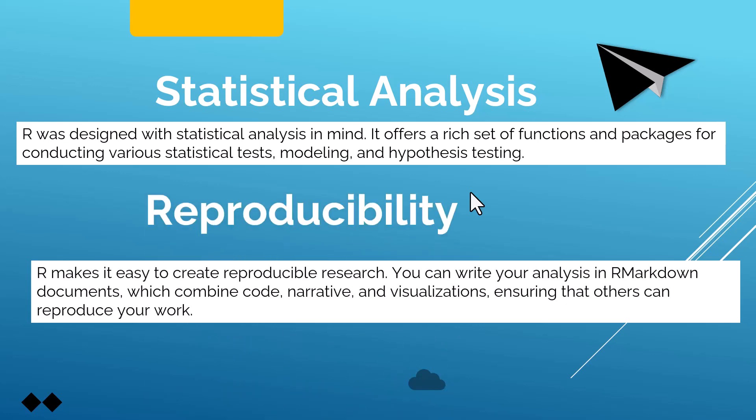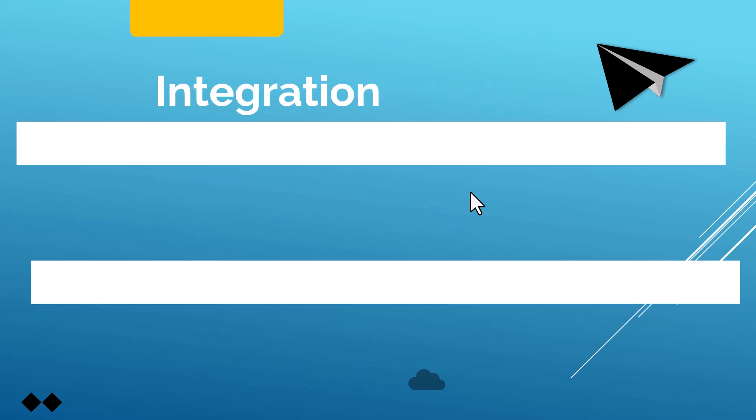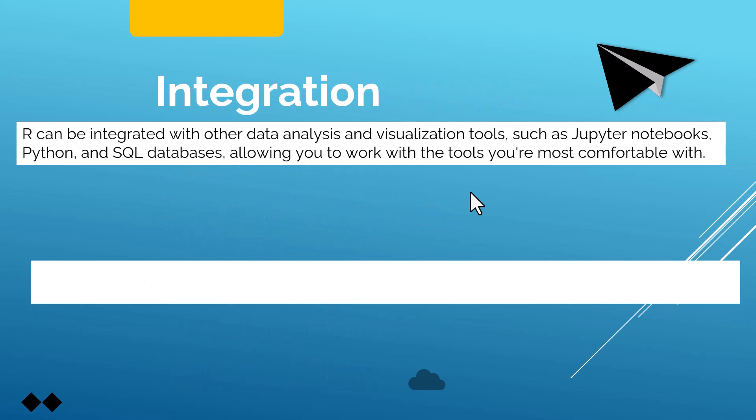Reproducibility: R makes it easy to create reproducible research. You can write your analysis in R Markdown documents, which combine code, narrative, and visualizations, ensuring that others can reproduce your work. Integration: R can be integrated with other data analysis and visualization tools such as Jupyter Notebook, Python, SQL databases, and others, allowing you to work with the tools you are most comfortable with.